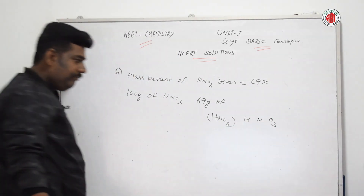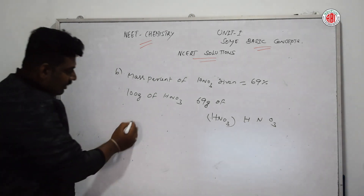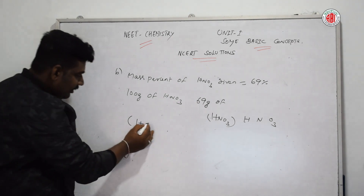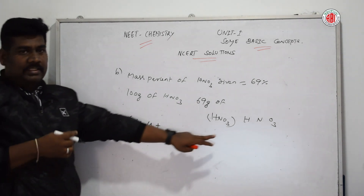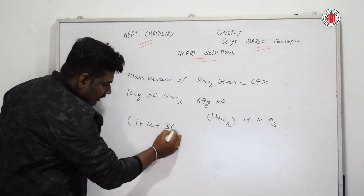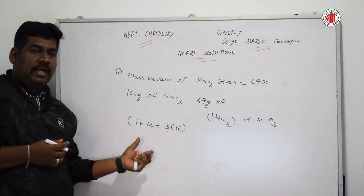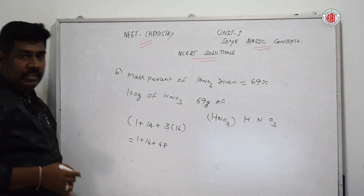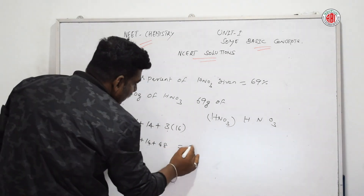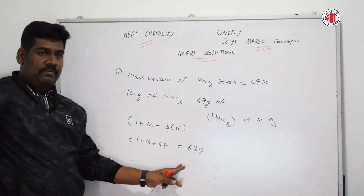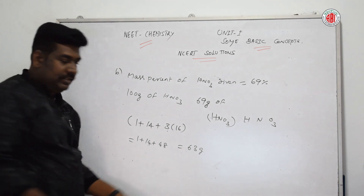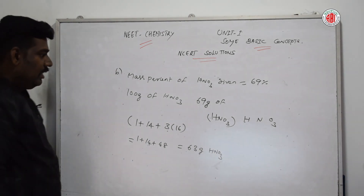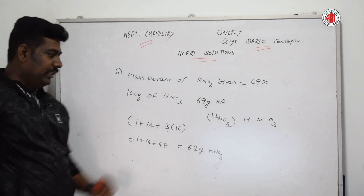In HNO₃ there are three individual elements: H, N, and O₃. Molar mass: hydrogen = 1, nitrogen = 14, oxygen = 3 × 16 = 48. Adding all: 1 + 14 + 48 = 63 grams. The overall molar mass of HNO₃ is 63 grams per mole.